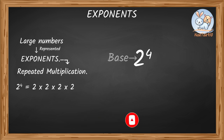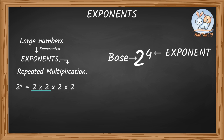In 2 to the power of 4, 2 is the base and 4 is the exponent. The number which gets multiplied repeatedly a certain number of times is called the base. The number of times the base should be multiplied is called the exponent, or index, or power. In 2 to the power of 4, 2 is multiplied repeatedly — it is the base — and it is repeated 4 times, so 4 is the exponent.